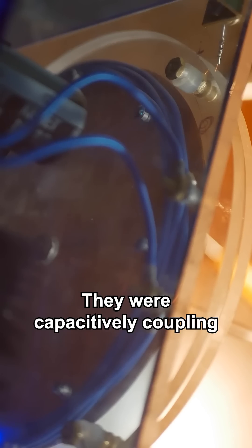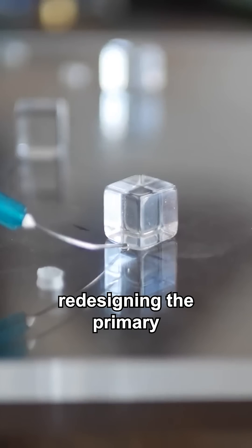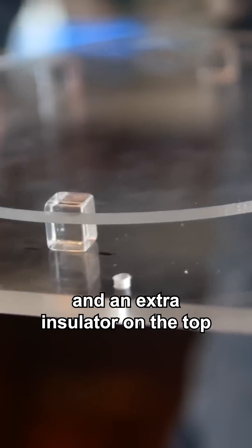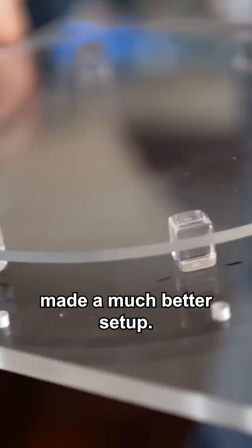The metal screws were a terrible idea. They were capacitively coupling to the secondary, causing arcing between primary and secondary. So I set to work redesigning the primary coil structure. Metal bolts replaced with plasma cubes, and an extra insulator on the top made a much better setup.